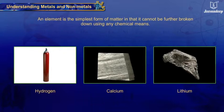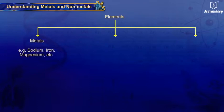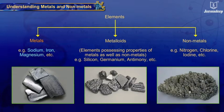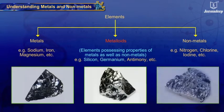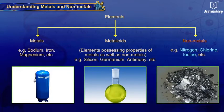Elements can be mainly classified into three types: metals, metalloids, and non-metals. Elements like sodium, iron, and magnesium are metals. Metalloids are elements that possess properties of both metals and non-metals — elements like silicon, germanium, and antimony are metalloids. Elements like nitrogen, chlorine, and iodine are non-metals.